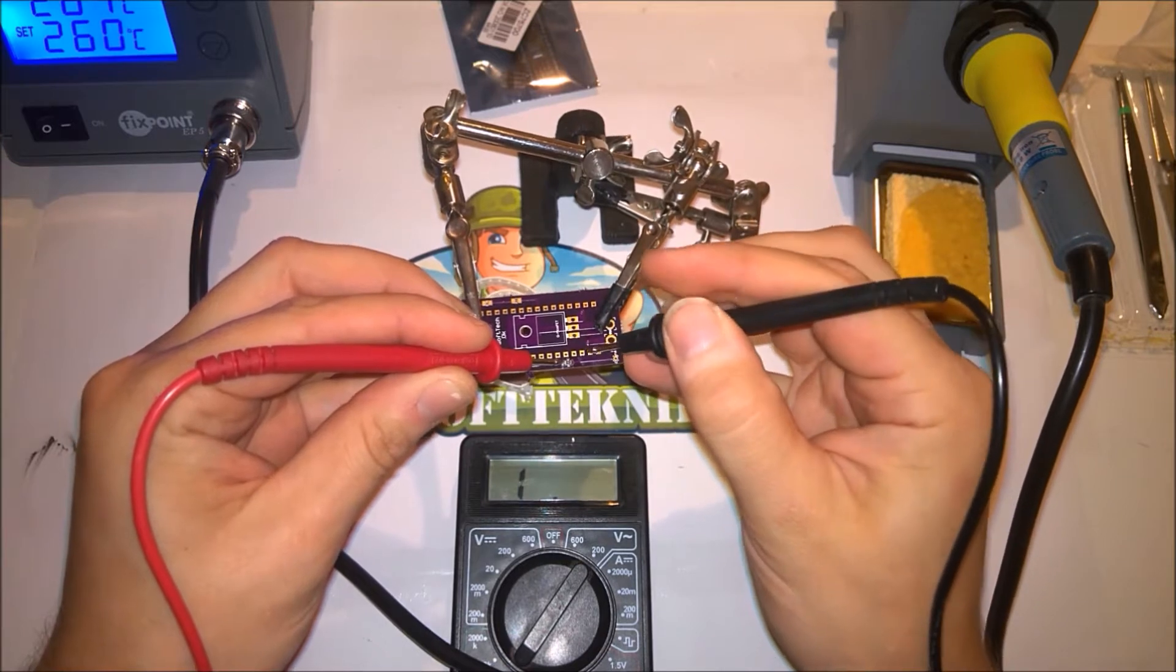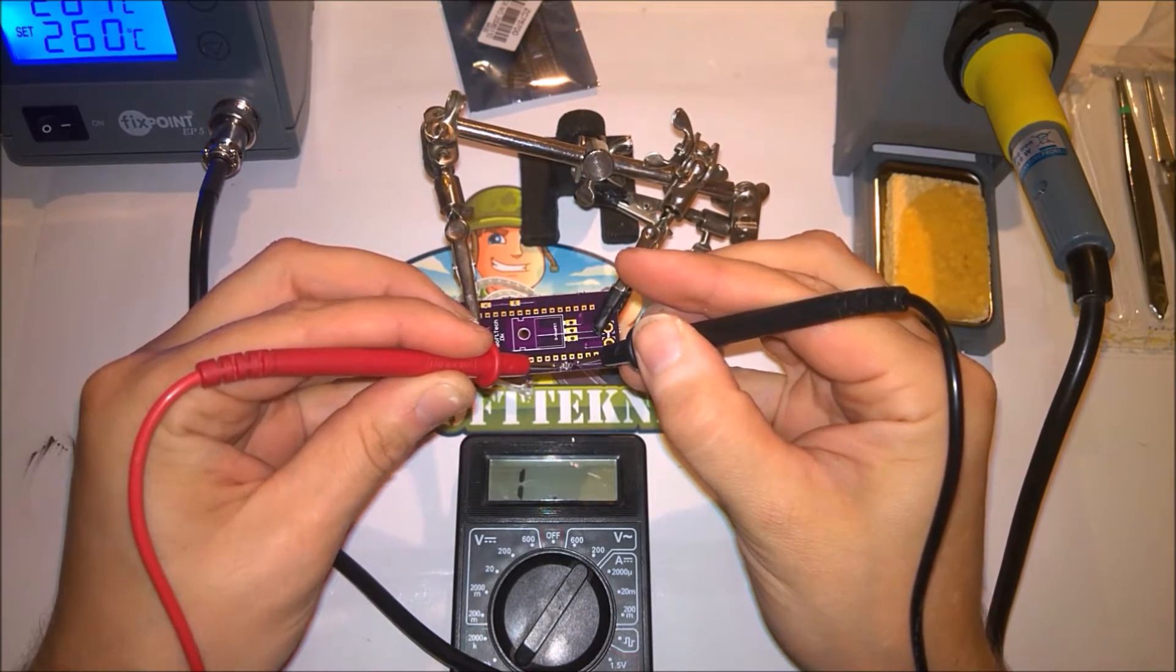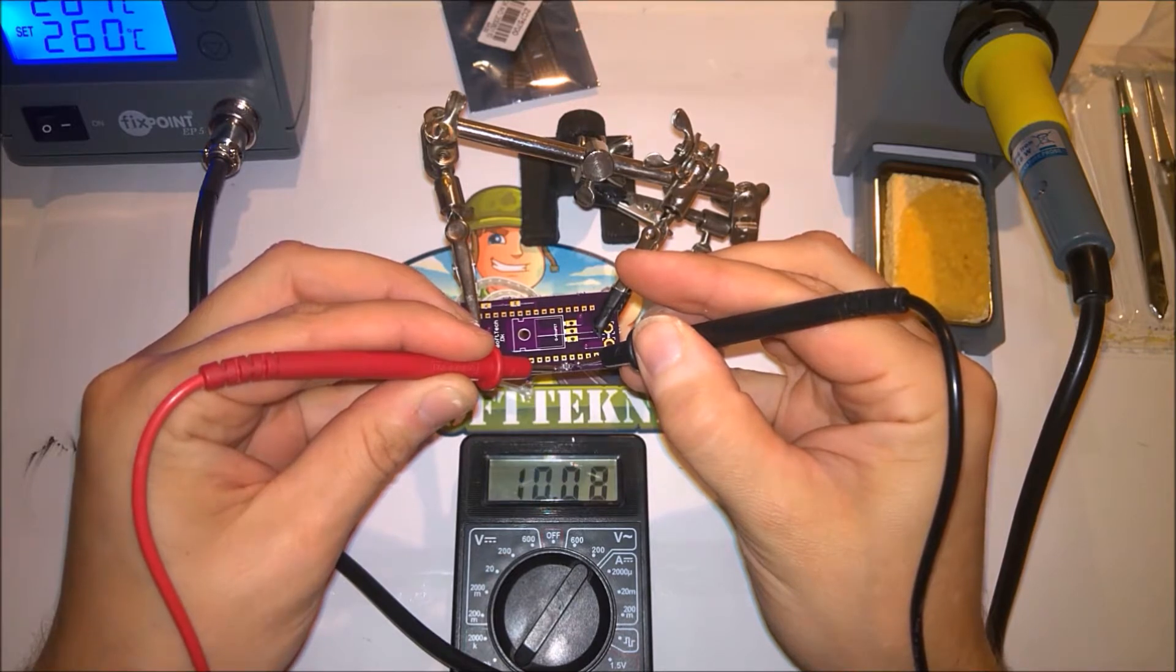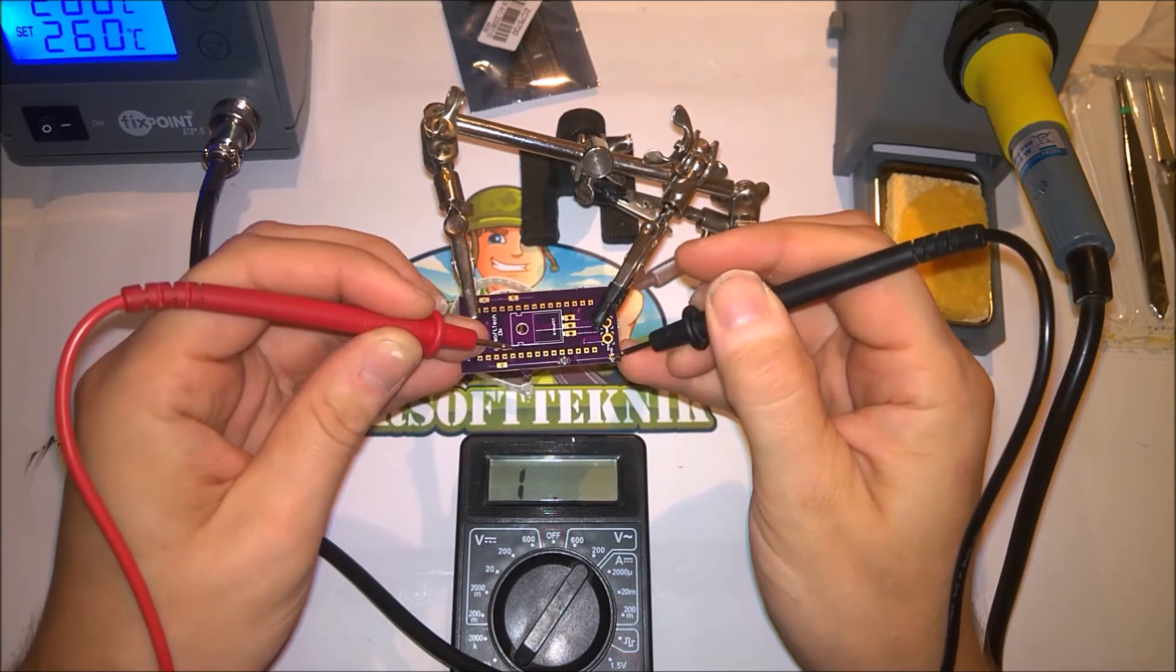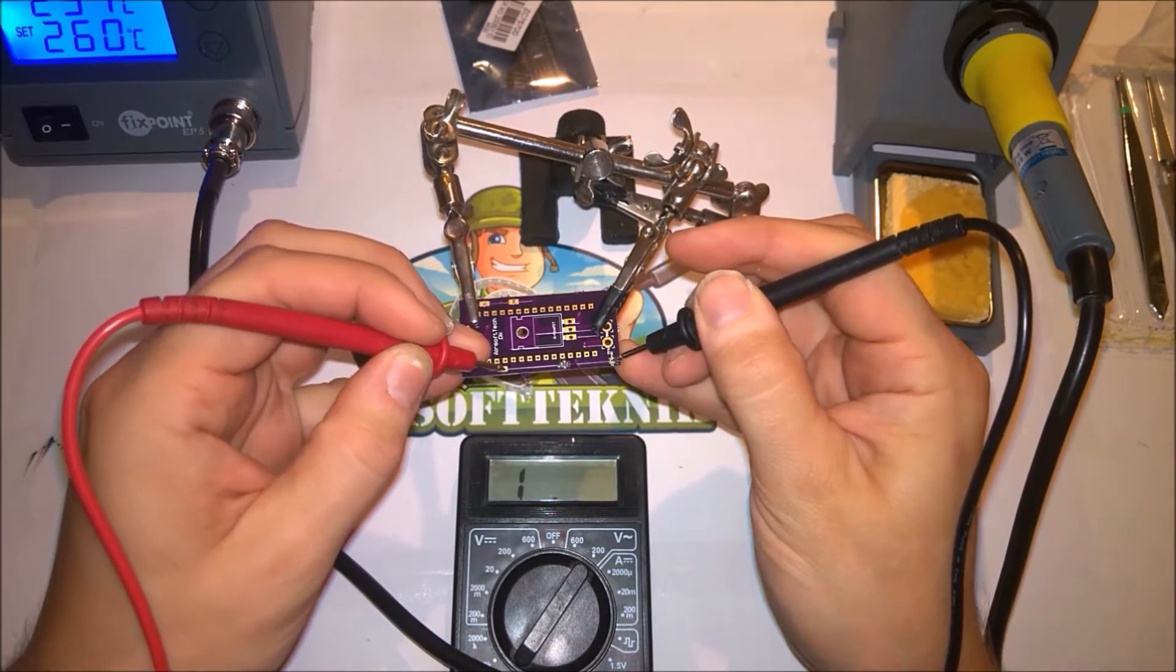After soldering on the resistor I use a multimeter to check that the resistor is on correctly. I do this by just measuring the resistance between the two pads.